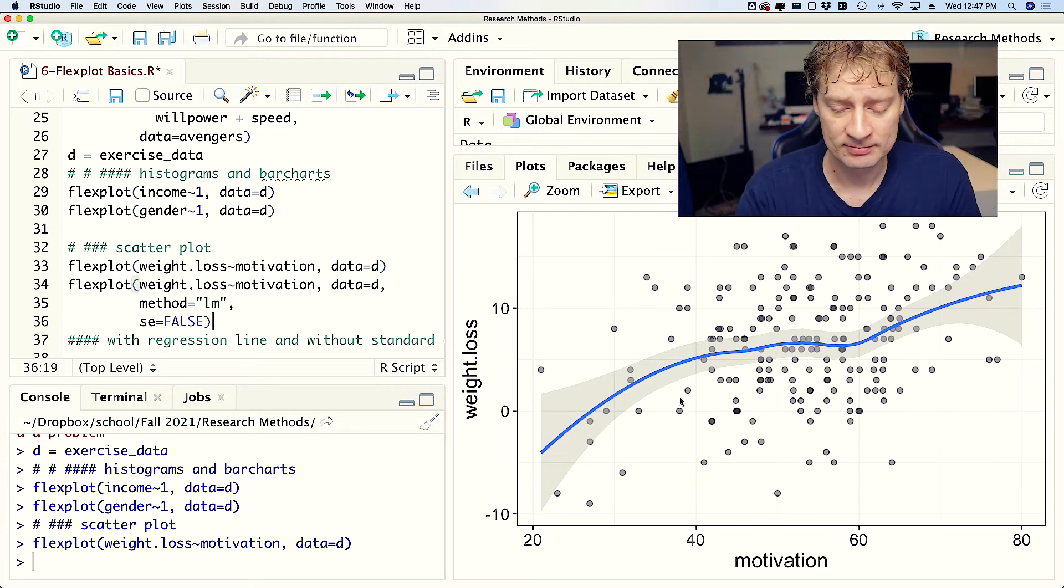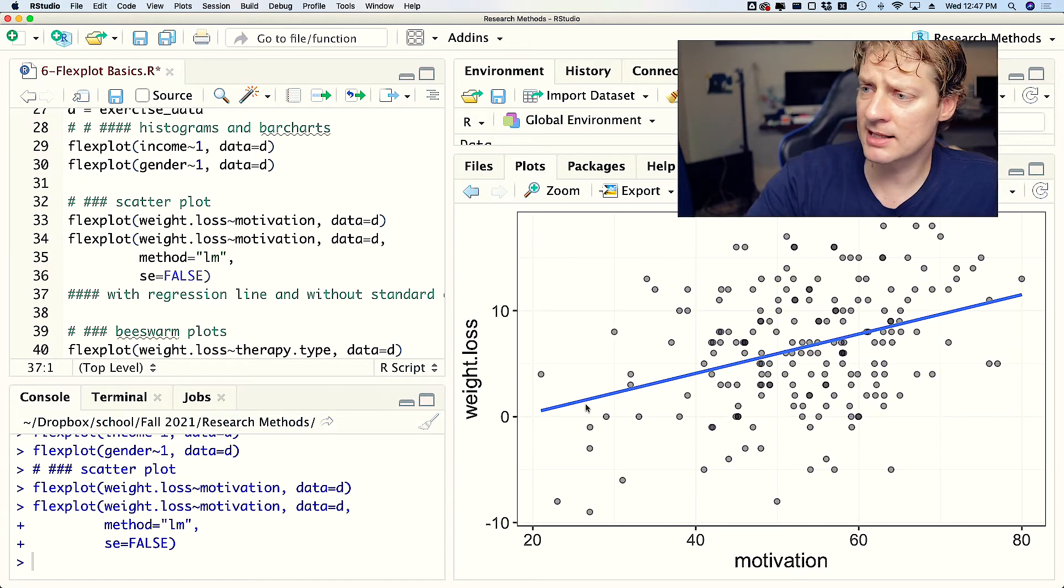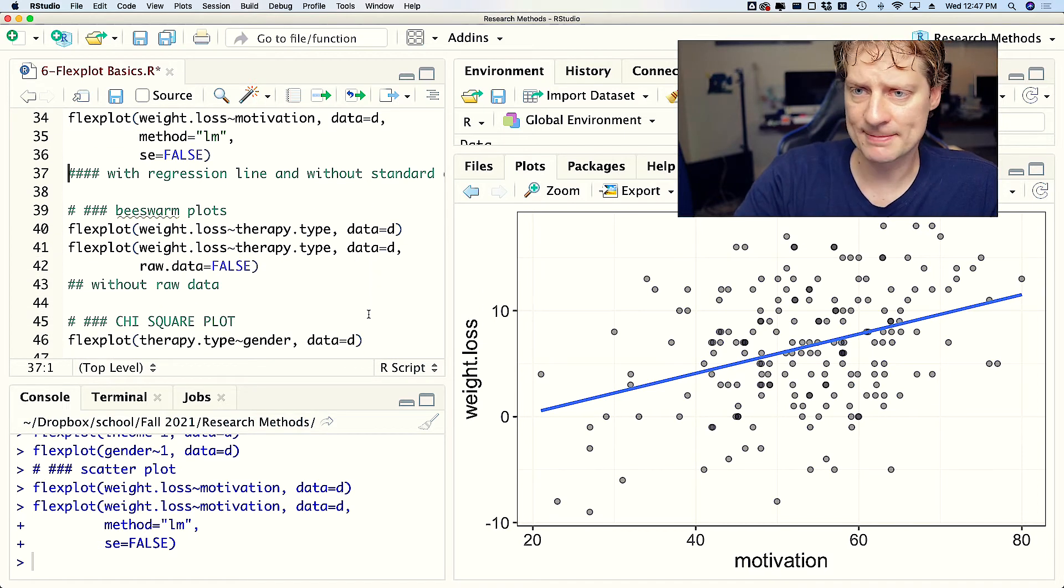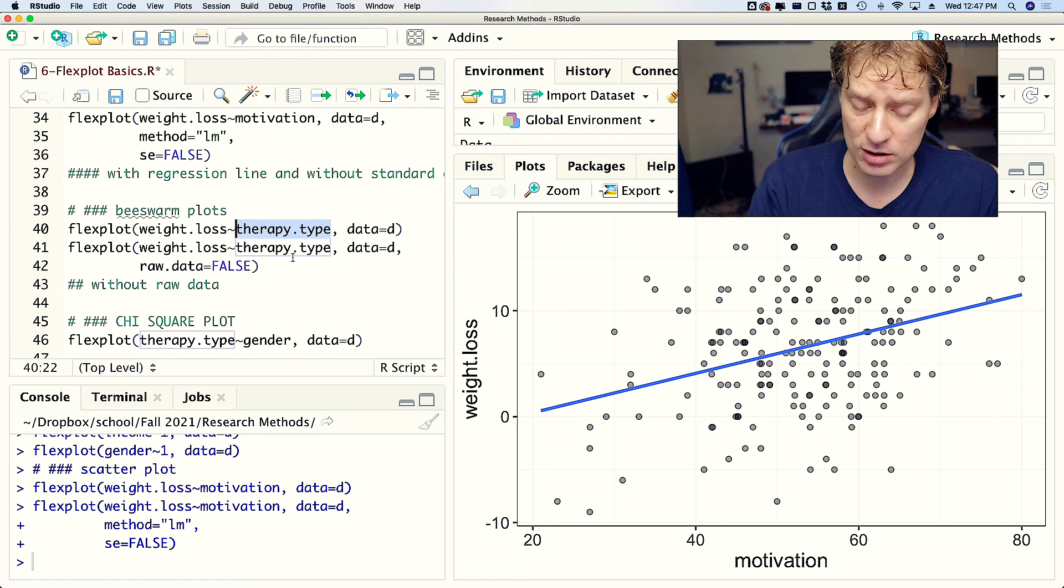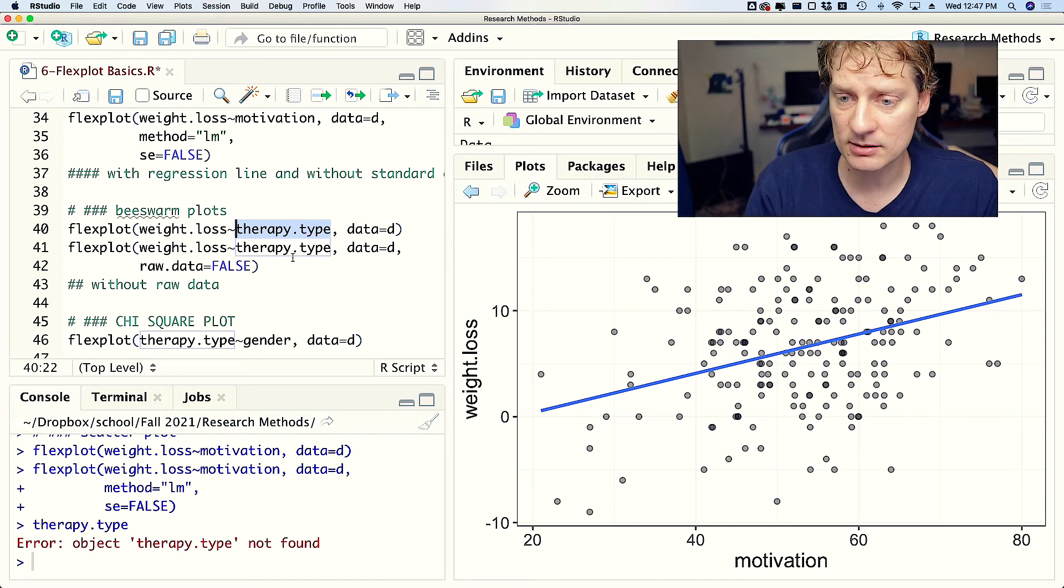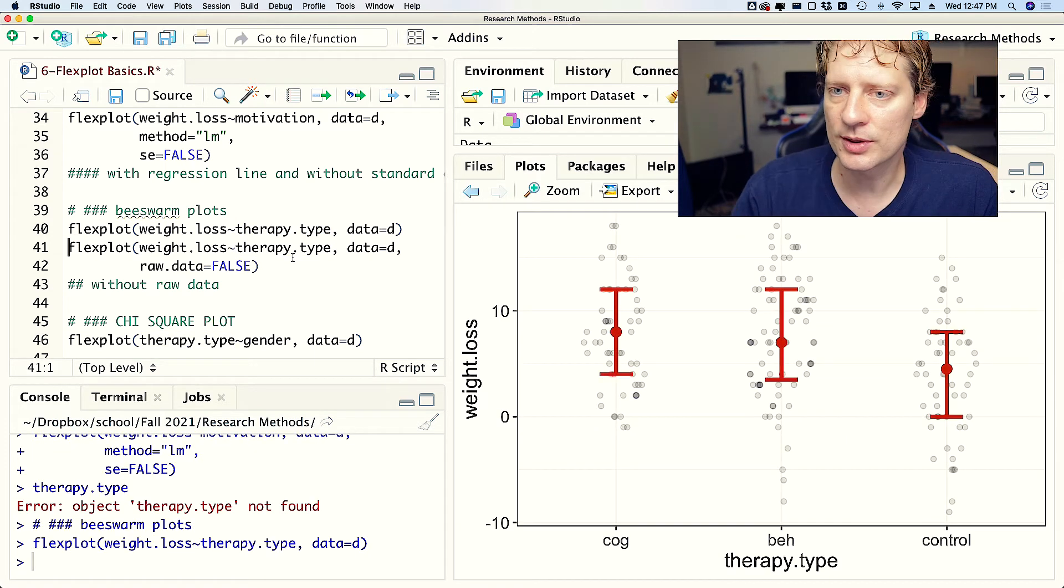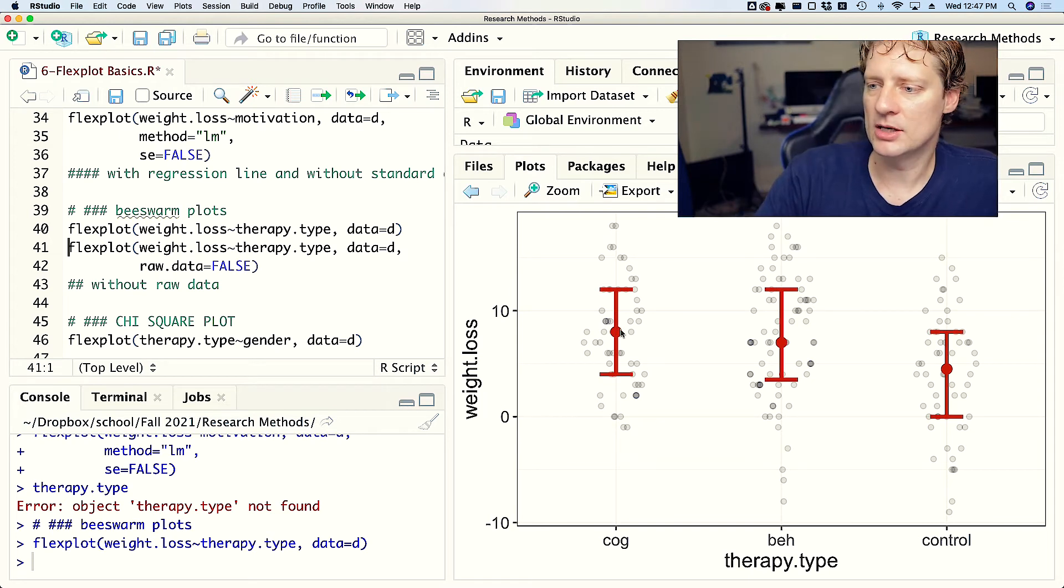If I run that, we get a very simple scatterplot with a line. Now we can also do beeswarm plots. So that's what happens when you put a categorical variable on the x-axis. We get cog, behavioral, and control.